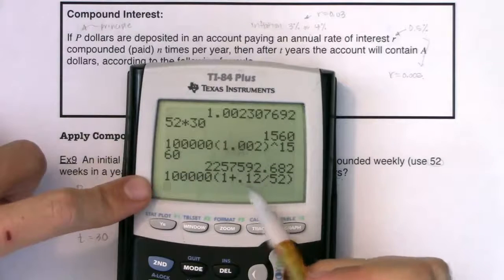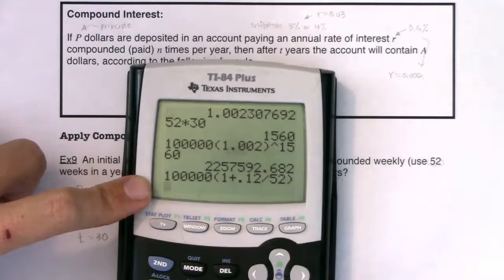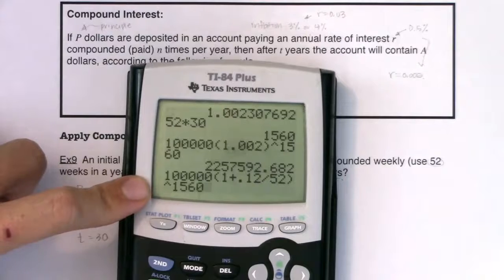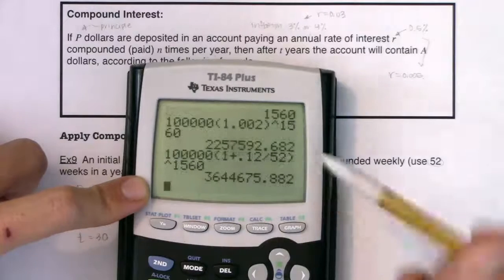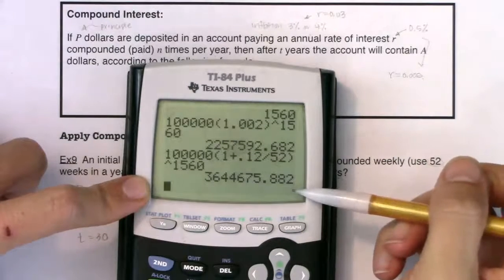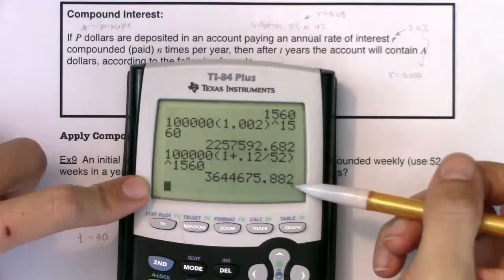If instead of 1.002 I did 100,000 times 1 plus 0.12 divided by 52, right? I don't use 1.002. I use the original problem and I raise it to the 1,560 power.